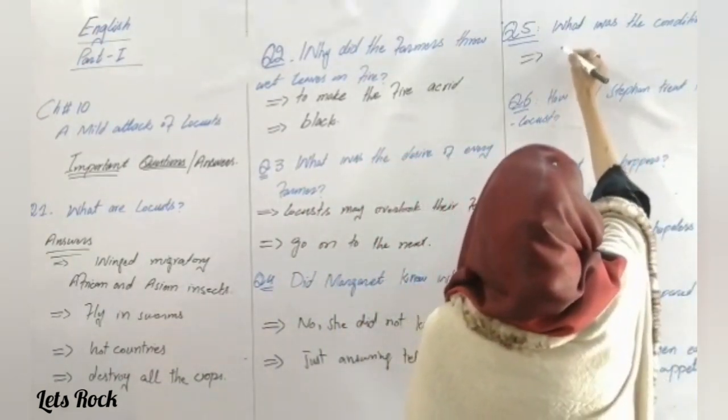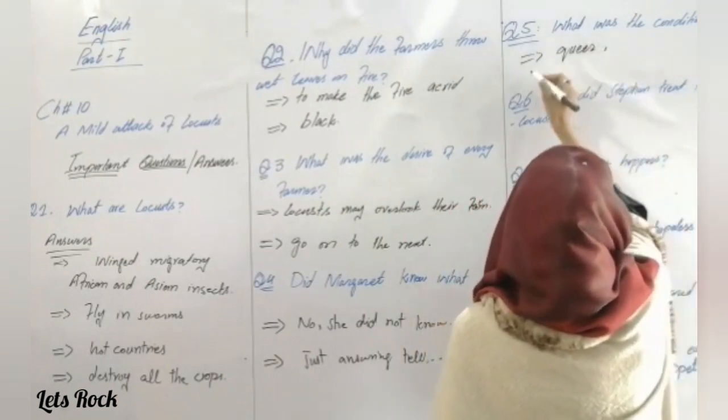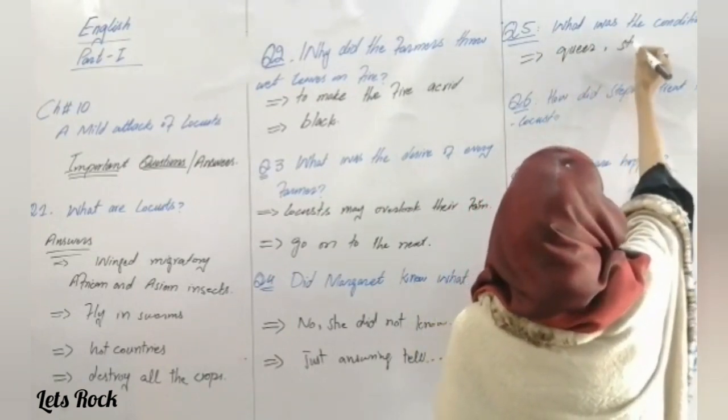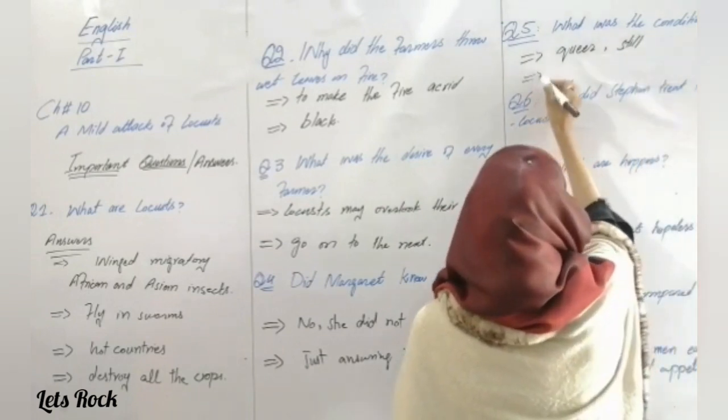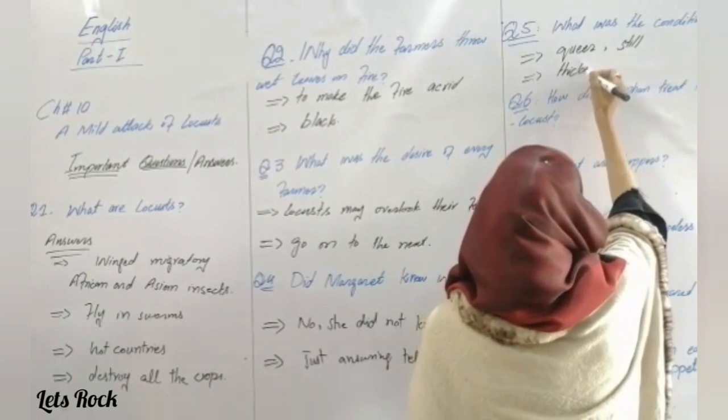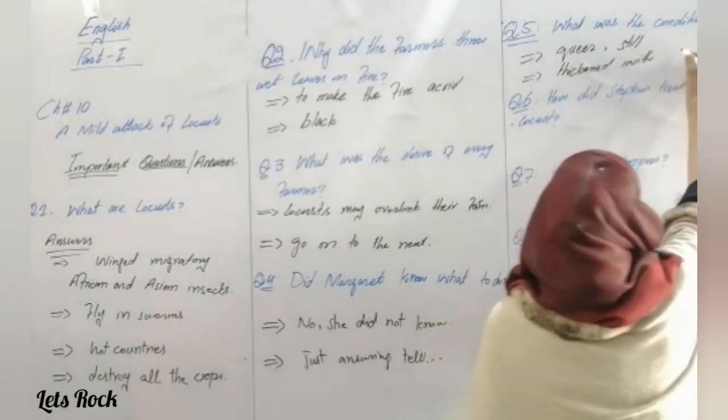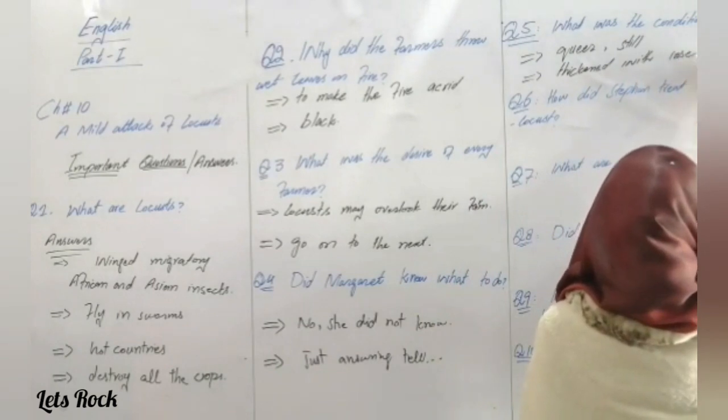The trees were looking strange and still. Second, their boughs were thickened with insects, meaning locusts.